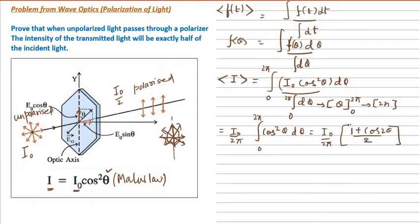So it becomes I₀ by 2π, then (1 + cos 2θ)/2 dθ from 0 to 2π. This 2 comes out, so it becomes I₀ by 4π. Now integration: let us put it in the bracket - integration of 1 dθ from 0 to 2π plus integration of cos 2θ dθ from 0 to 2π.